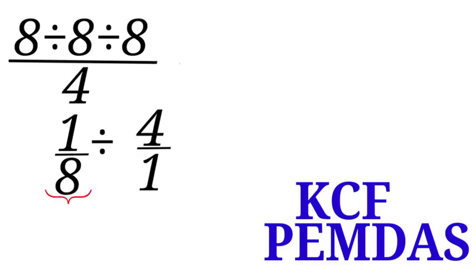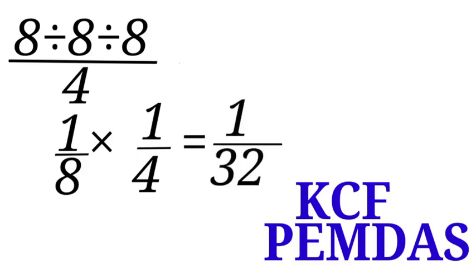So we are going to keep 1 over 8. We will change division sign to multiplication sign. And we are going to flip 4 over 1. We take 1 to the numerator and bring 4 to the denominator. So our new expression is 1 all over 8 times 1 all over 4. That is equal to 1 all over 32. That is the correct answer.